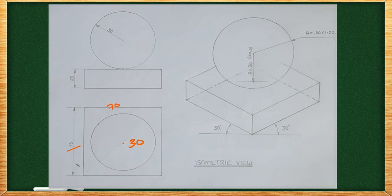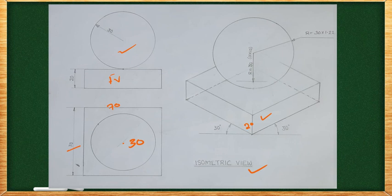This is the front view of the square block, along with the front view and top view. Moving to the isometric view — isometric view is very important and uses full-size scale. The square block is 70 mm in length. We first draw the rhombus for the top face, then add the 20 mm height to get another rhombus.